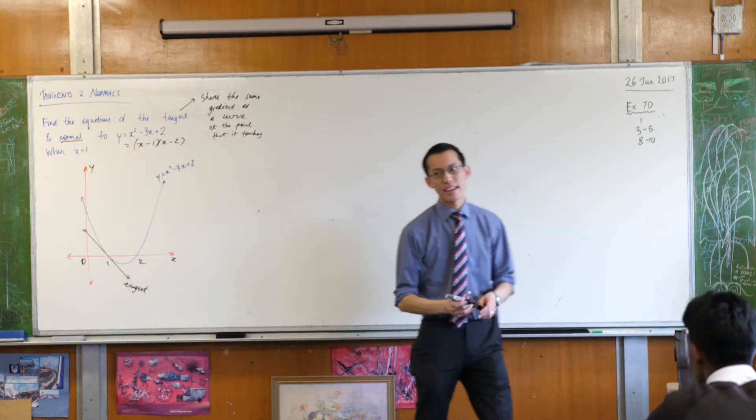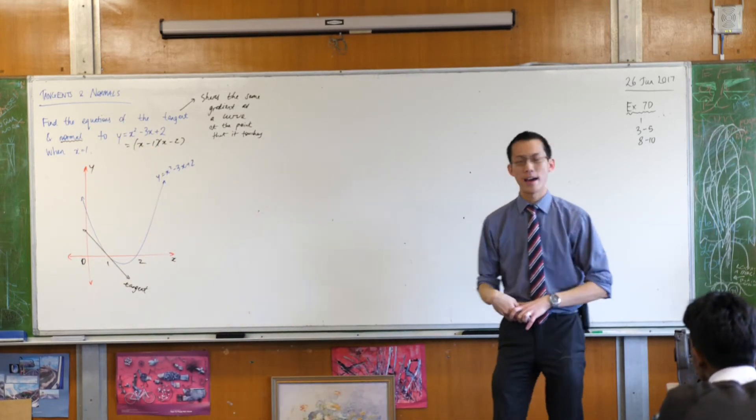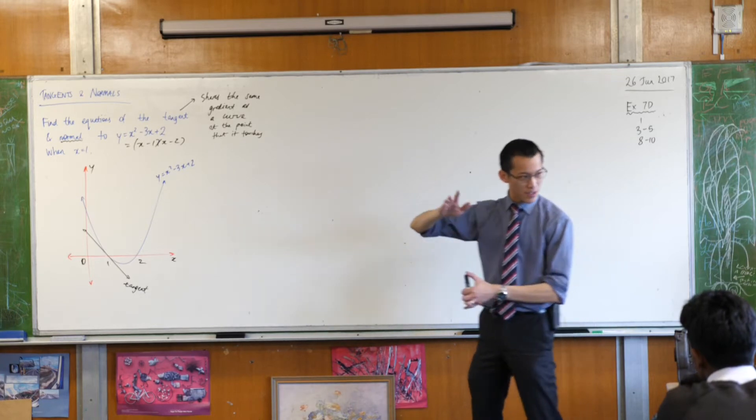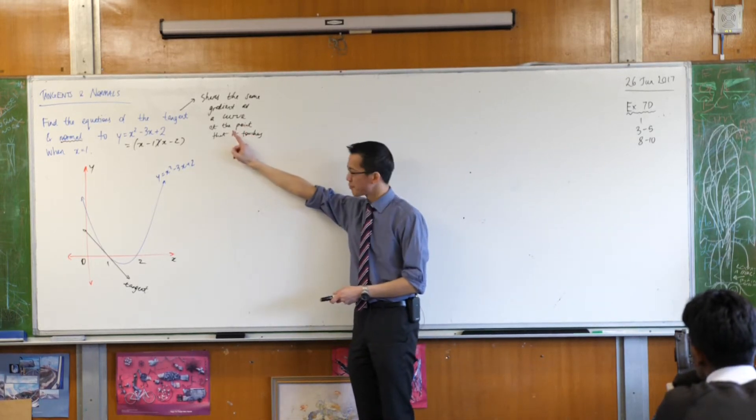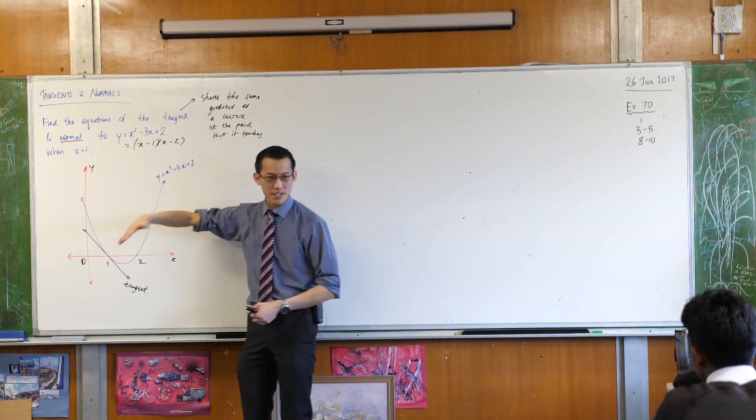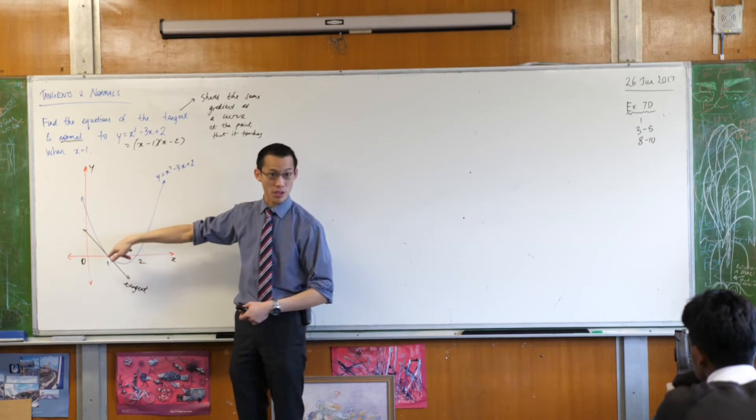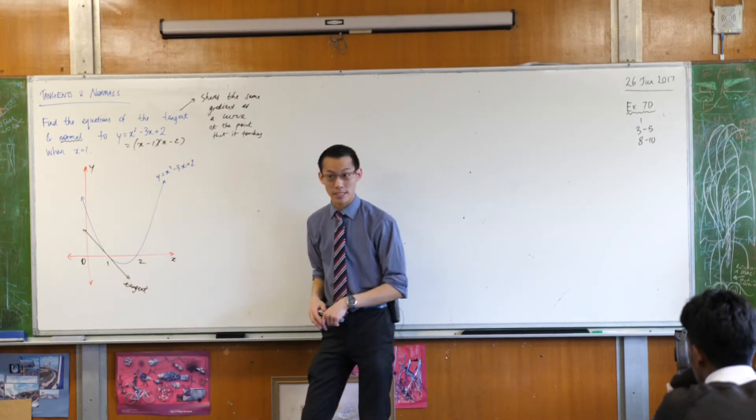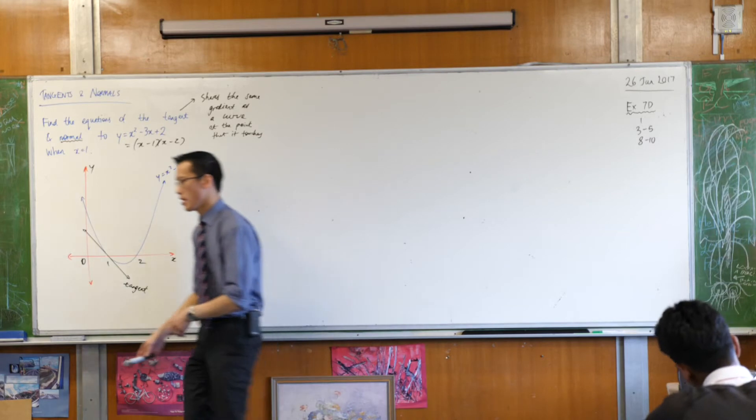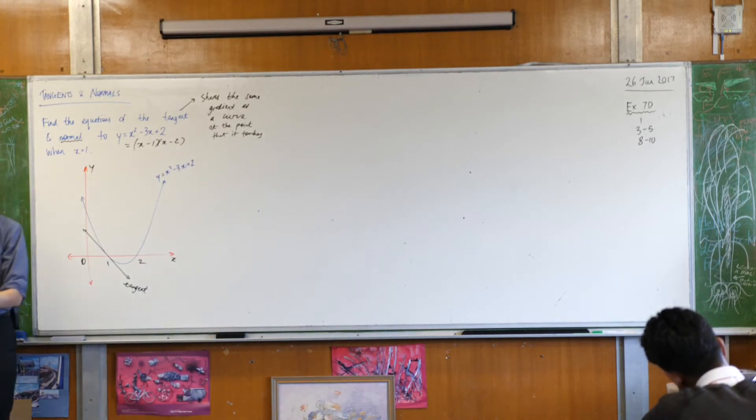A normal is just like a tangent in that it's also a straight line, but it doesn't have the same gradient as the curve. In fact, it has a perpendicular gradient to the curve, so it's at right angles with the tangent. You might like to label that. I'm going to put it in green because I'm going to draw my normal in green.